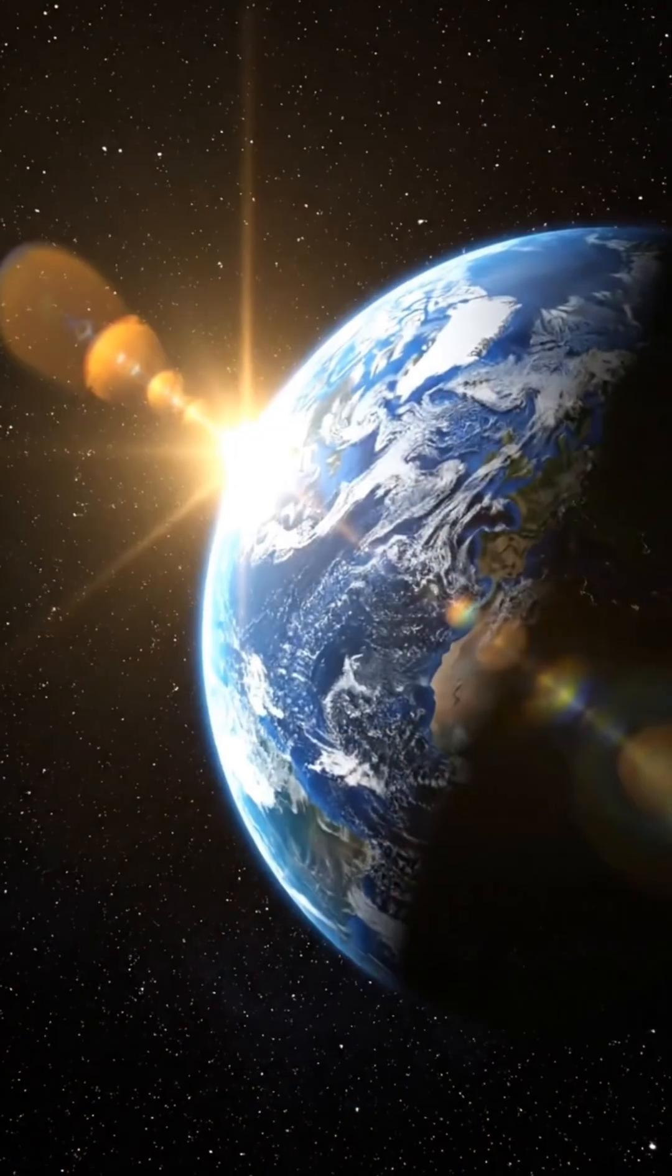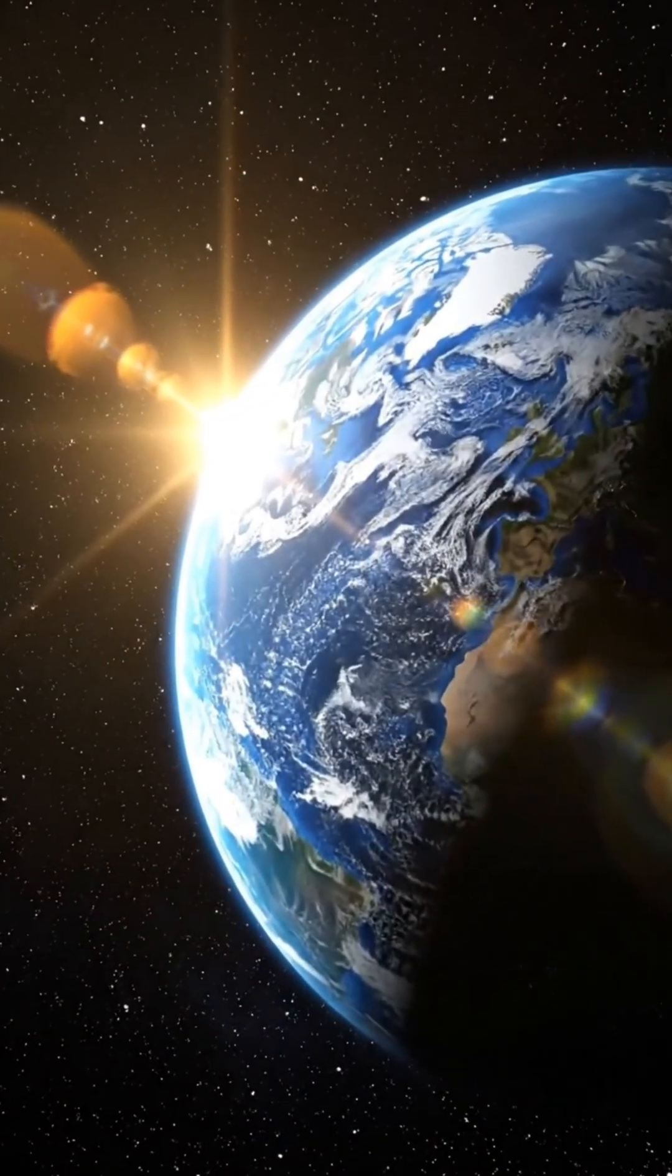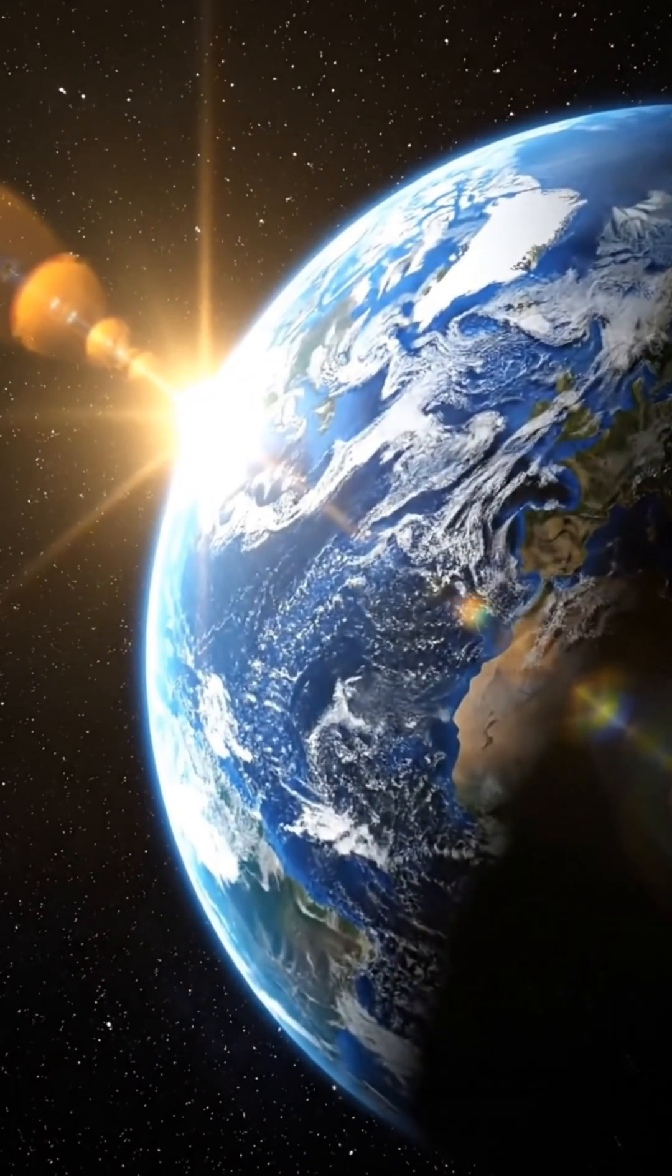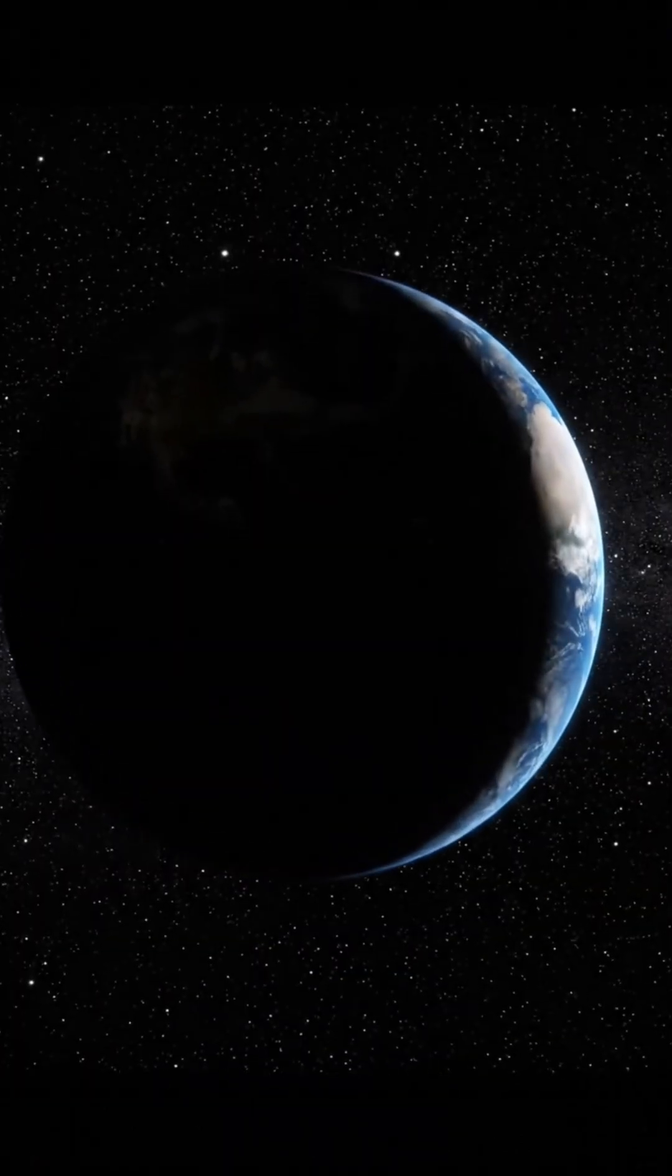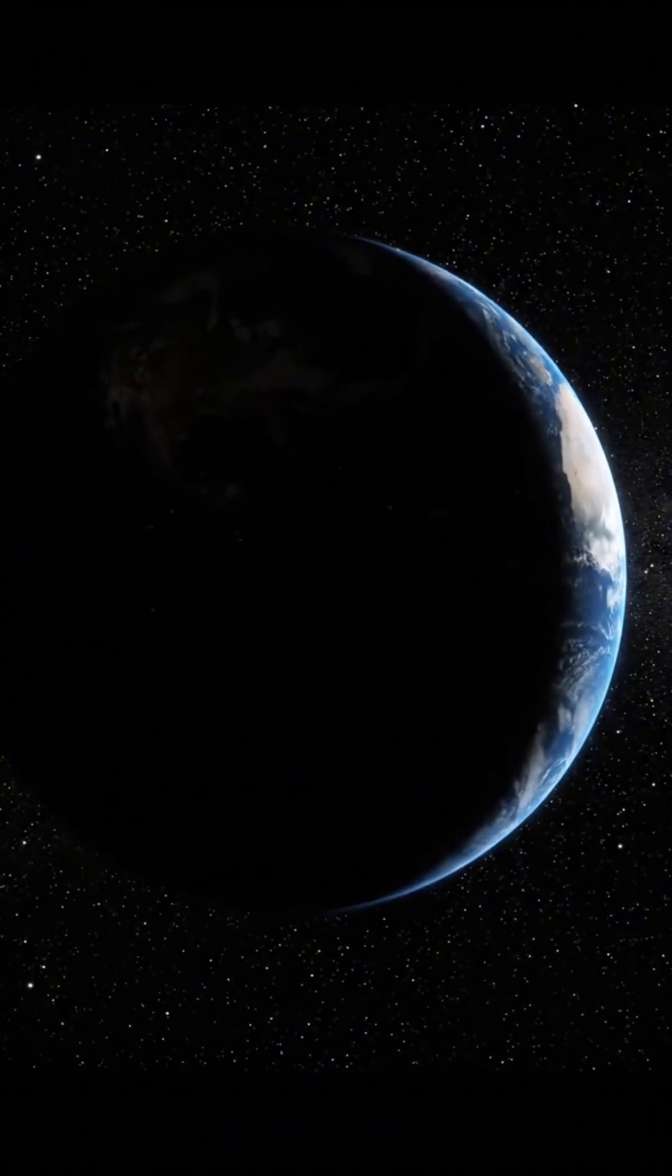If the Sun were to vanish tomorrow, the first eight minutes would feel entirely normal. That is the exact span of time it takes for its light and gravitational influence to reach Earth. After those eight minutes, the lights go out, and the real consequences begin.